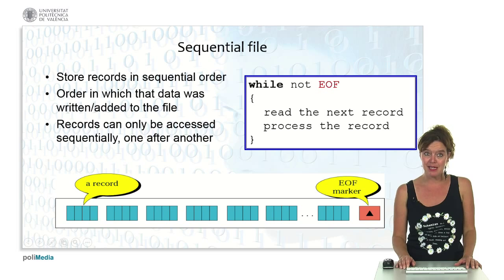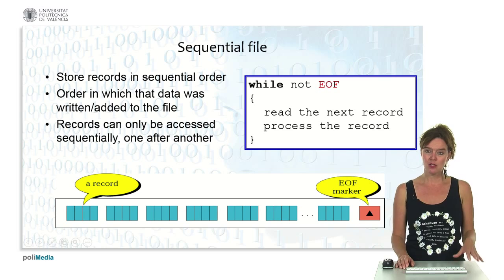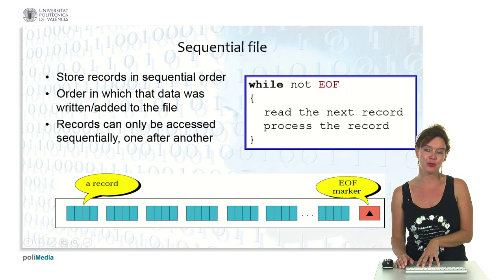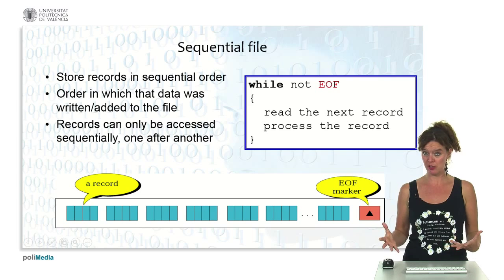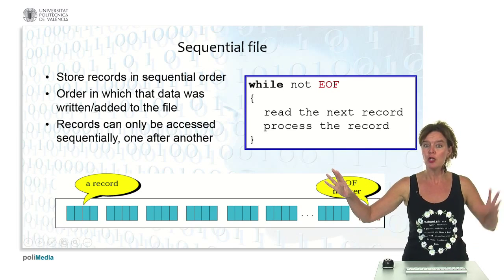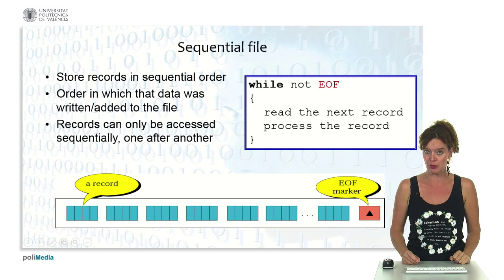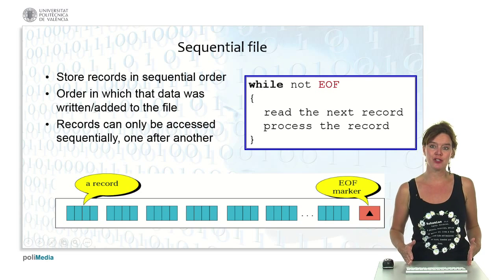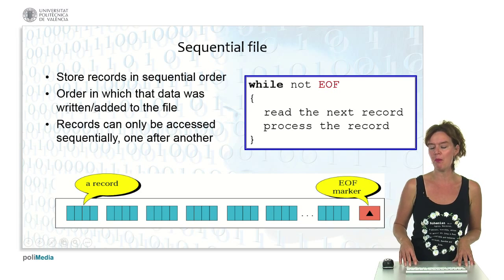Sequential file organization, as the name implies, stores the records in sequential order. They're stored one after another in the order in which the data was written or added to the file. Records can only be accessed sequentially, one after the other. If you want to find a record in the middle of the file, you have to go through all the records before that specific record. Sequential files are characterized by an end-of-file marker.